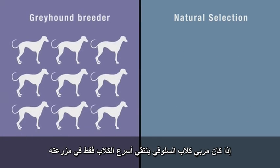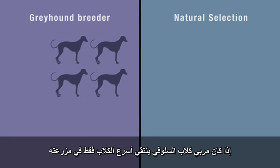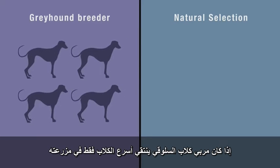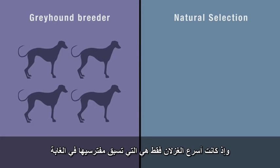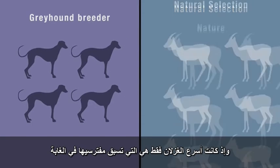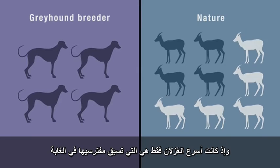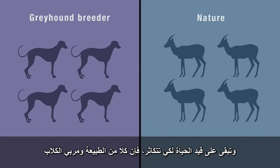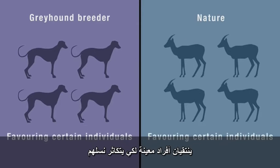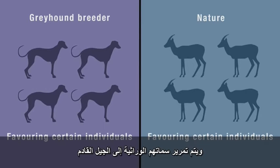If a greyhound breeder selects only the fastest dogs for breeding stock, and in the wild only the fastest gazelles outrun their predators and survive to reproduce, then both nature and the greyhound breeder are favouring certain individuals for reproducing offspring and passing on their genetic information to the next generation.